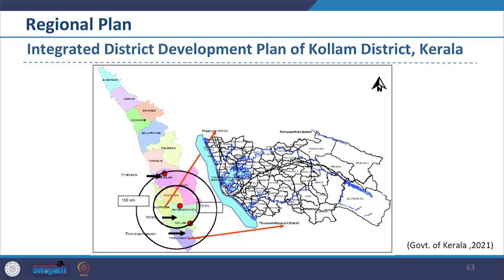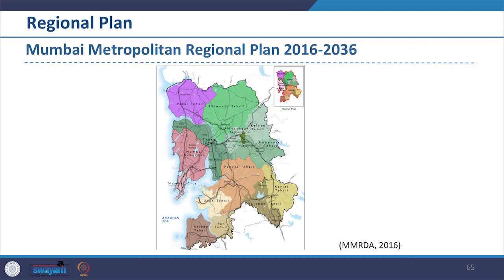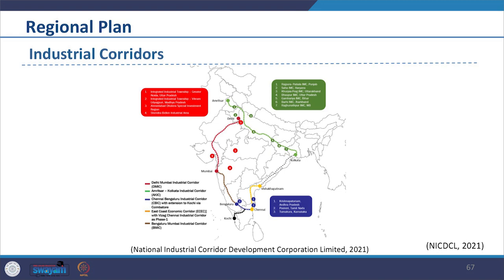We are looking at the image of North Goa extracted from the Goa Regional Plan document. Another example is the Integrated District Development Plan prepared at the district level by the state of Kerala — we are looking at the image of Kollam district taken from the Integrated District Development Plan of Kollam district, Kerala. Likewise, another example is the Mumbai Metropolitan Regional Plan 2016 to 2036, prepared by the Mumbai Metropolitan Authority, a regional plan prepared for a metropolitan area.